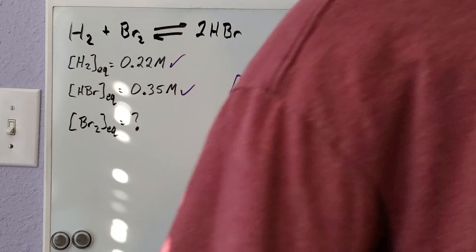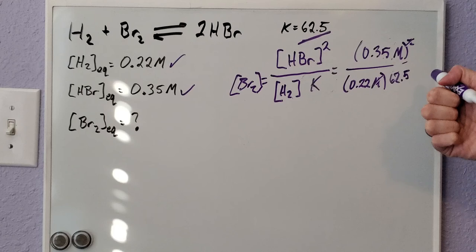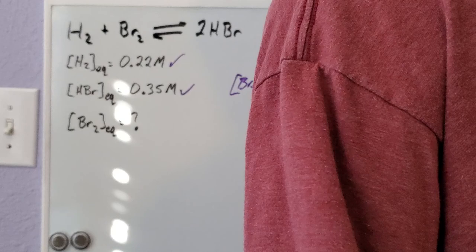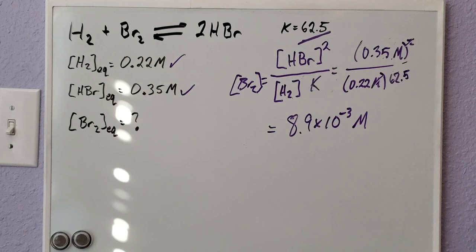Your equation you plug into your calculator is 0.35 squared divided by (0.22 times 62.5). When I put all of that into my calculator, I get 8.9 × 10⁻³ molarity. This is the concentration of Br2 at equilibrium.